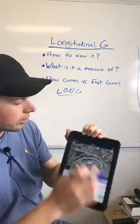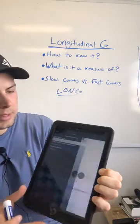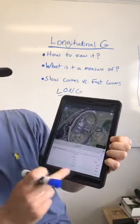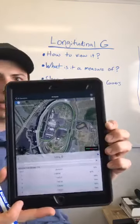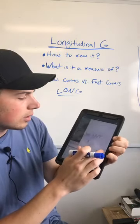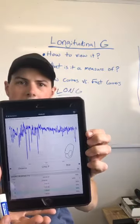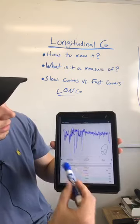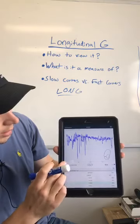So longitudinal G — what I'm going to do here is pull up a data session. We're looking at just a data session here. What I'm going to do is use the ticker in the middle of the screen and scroll down to long G. On the home base screen on the GPS satellite image we just scroll the ticker down to longitudinal G, or I can do the same thing on my speed trace page. I can go down to long G and we'll see it in graphical format. On this page long G will be represented on the y-axis and the x-axis will be either time or distance. So that's how we view it in the app.